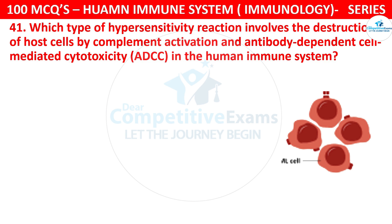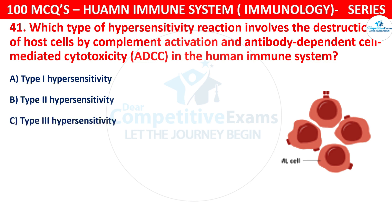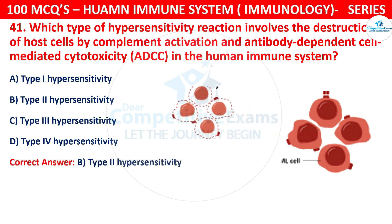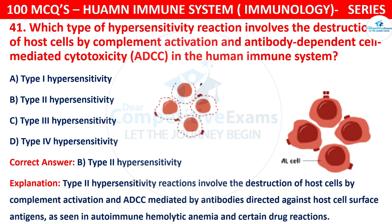The options are type 1 hypersensitivity, type 2 hypersensitivity, type 3 hypersensitivity, or type 4 hypersensitivity. The correct answer is B, that is type 2 hypersensitivity. Type 2 hypersensitivity reaction involves the destruction of host cells by complement activation and ADCC, mediated by antibodies directed against host cell surface antigens, as seen in autoimmune hemolytic anemia and certain drug reactions.